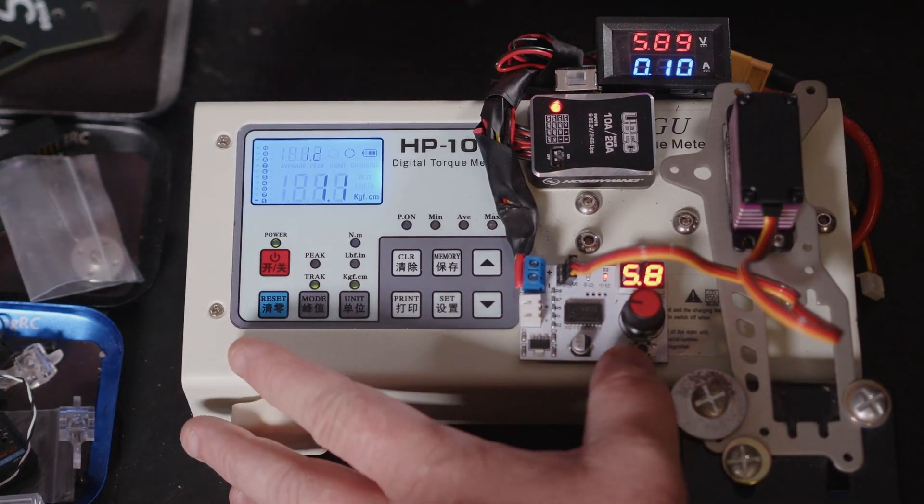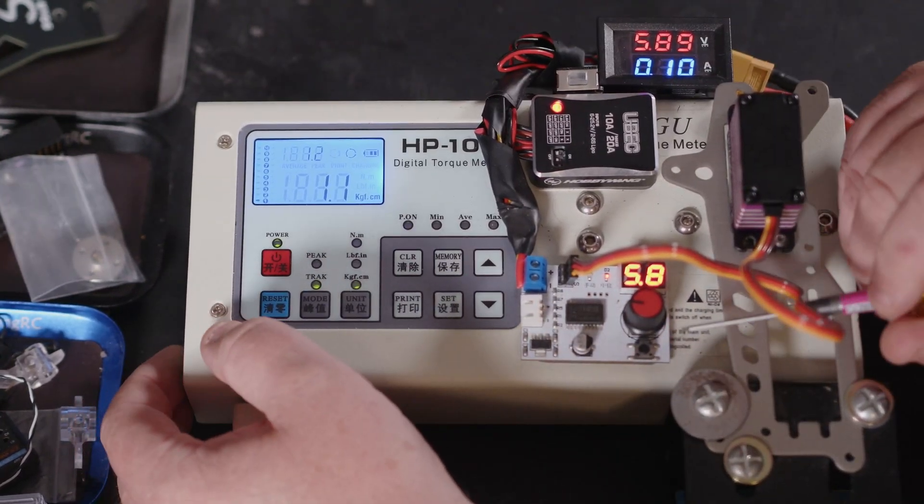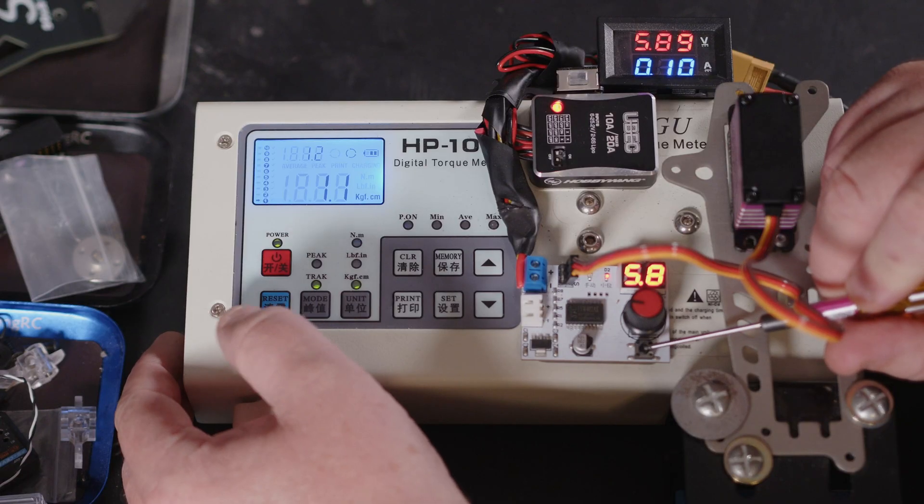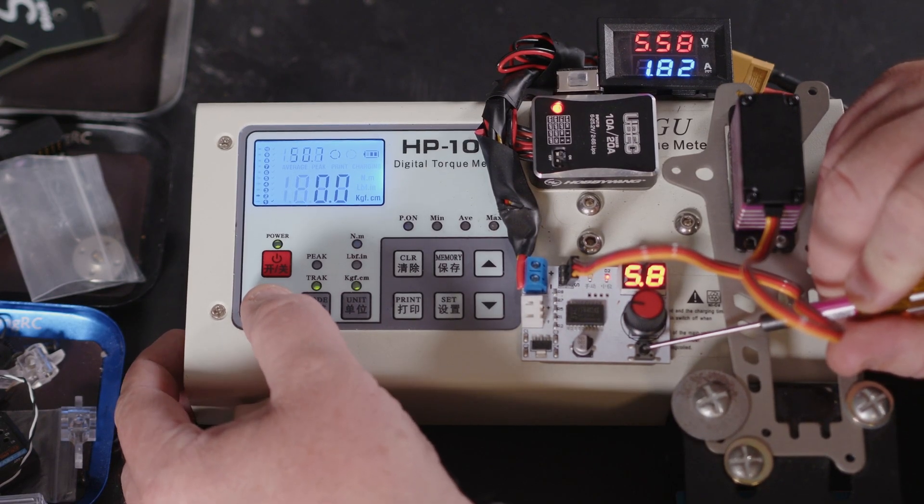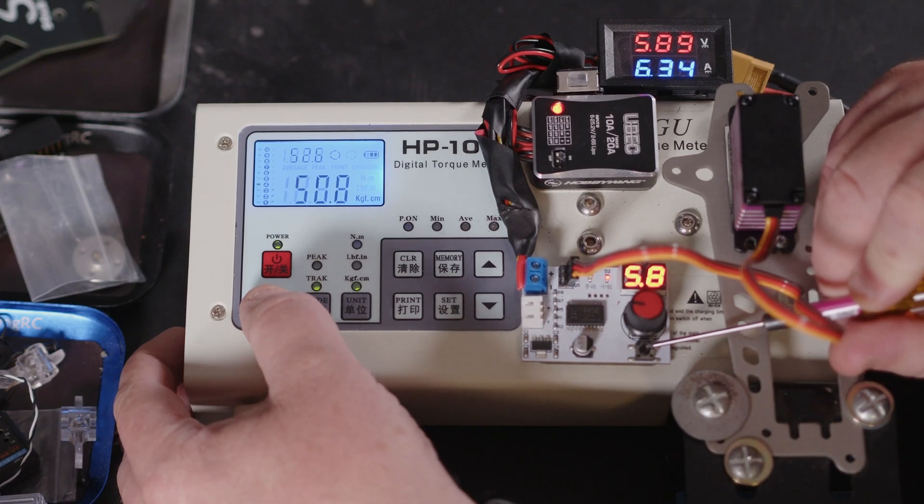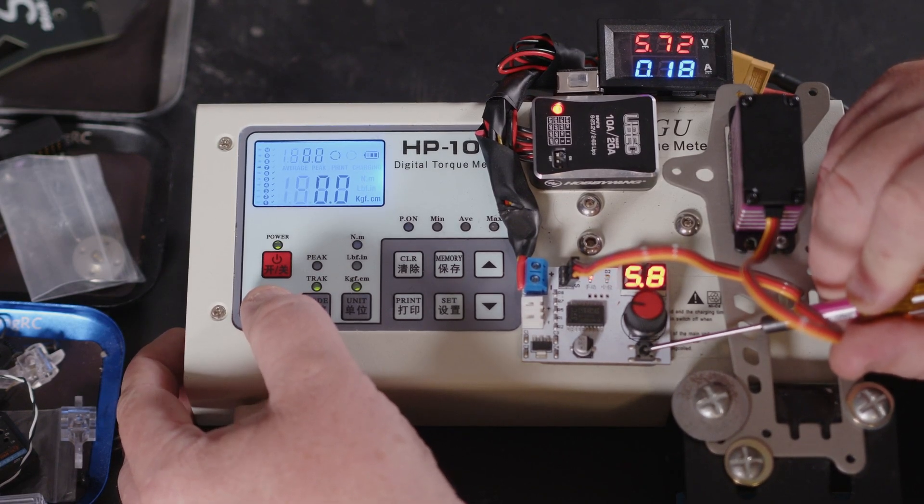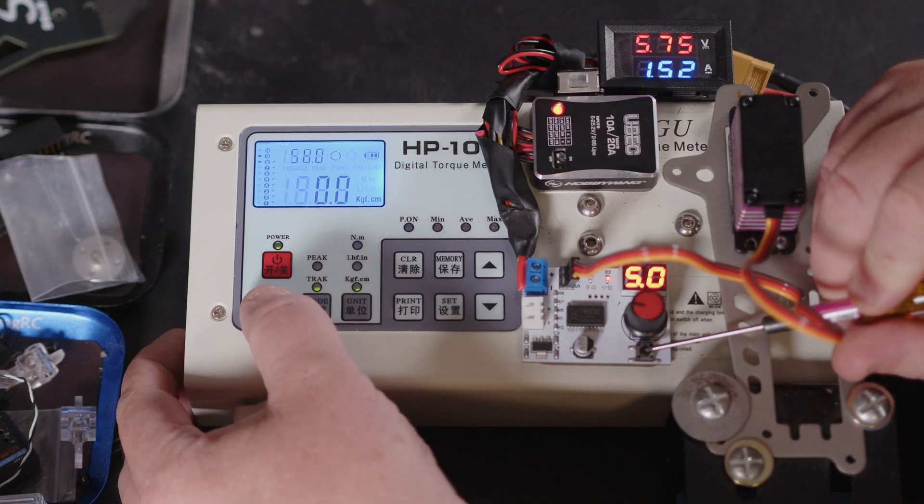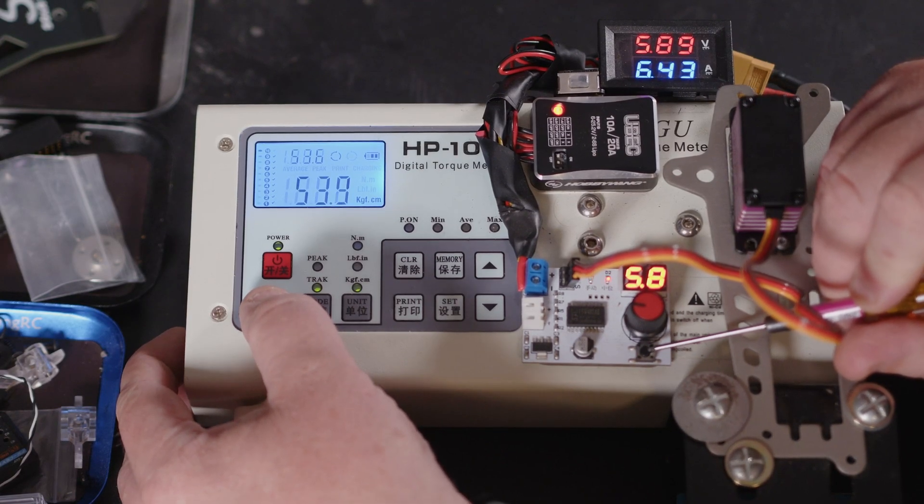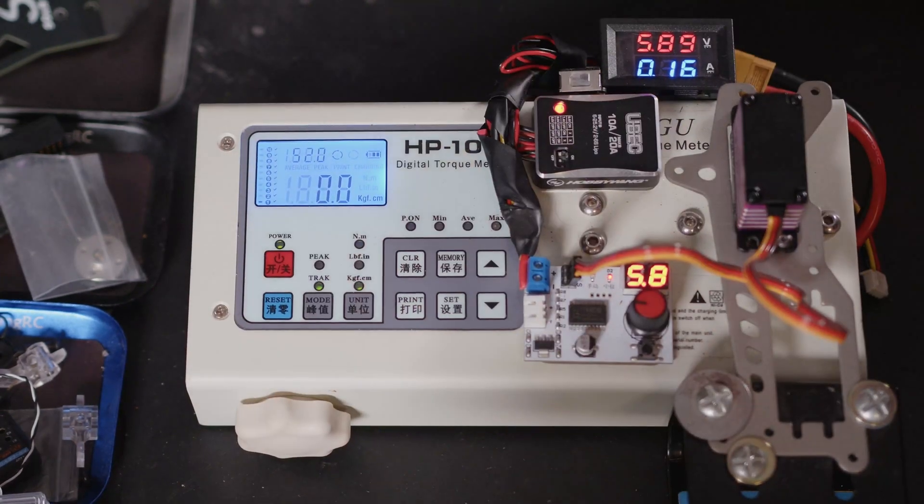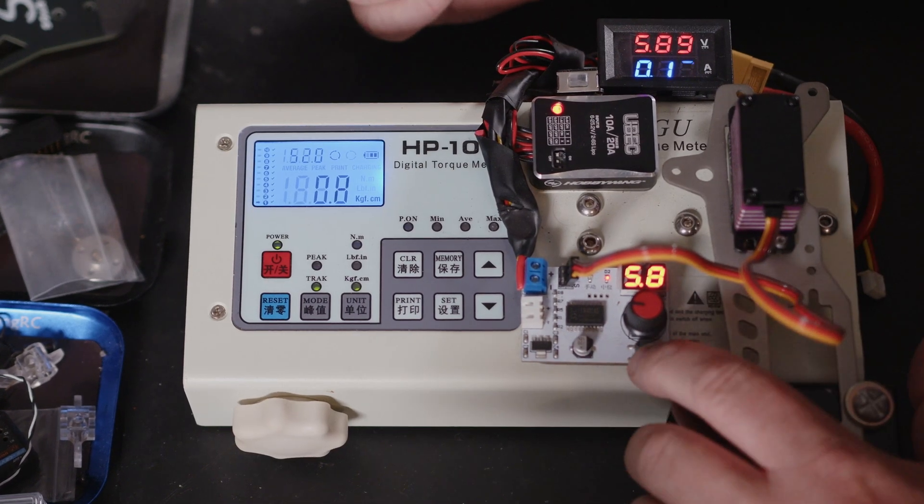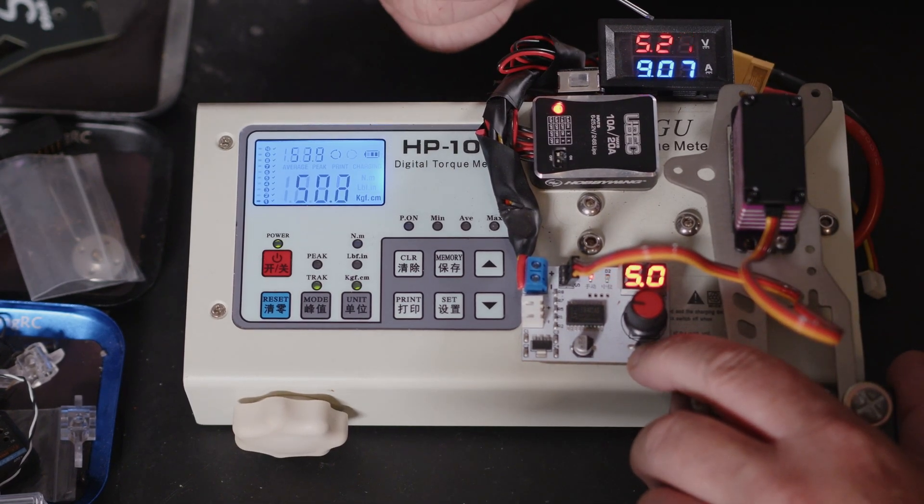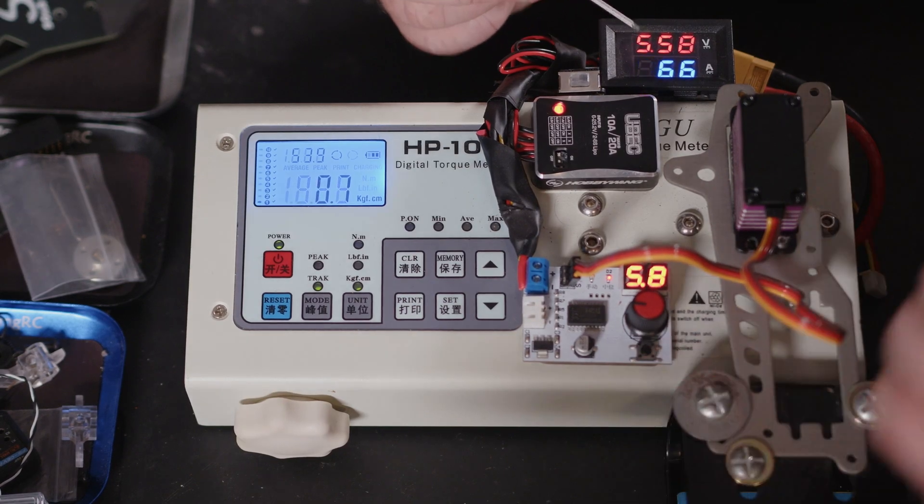Resting, we're drawing 0.1 of an amp and we're almost at 6 volts, so at least these two are agreeing. For 5.9 volts, if we look, we're dropping down to like 5.2, 5.3 volts, we are pulling nearly 8 amps at that.